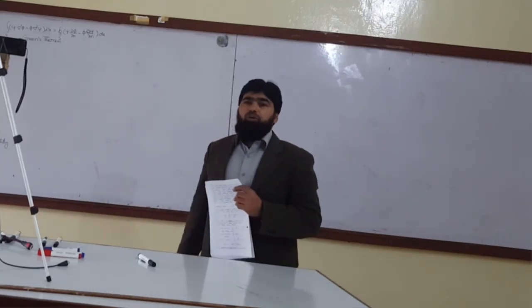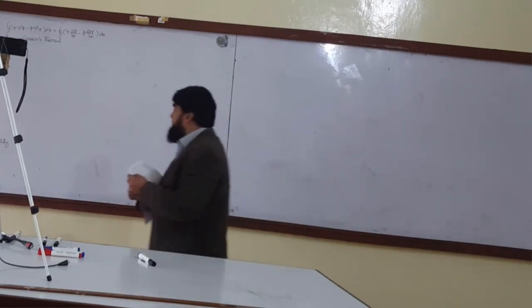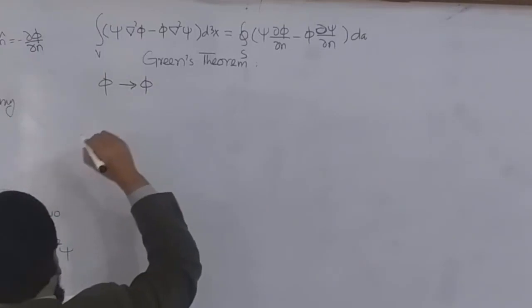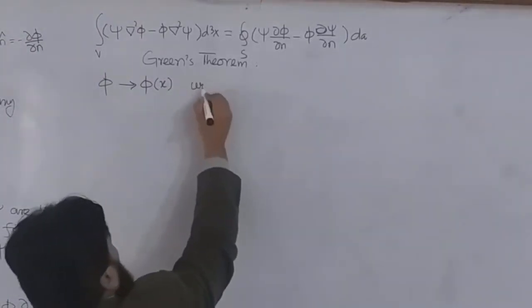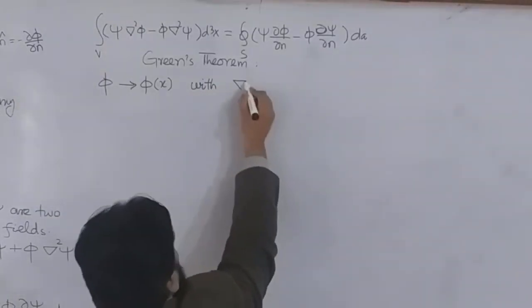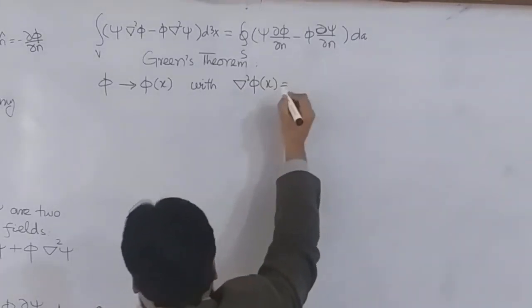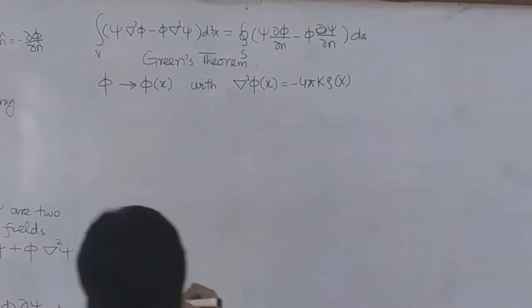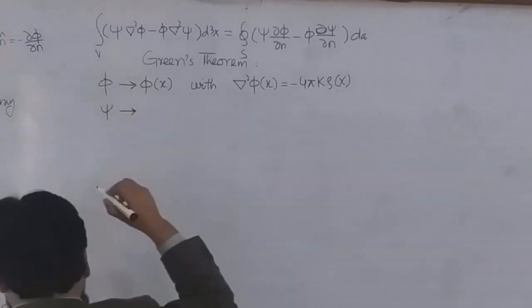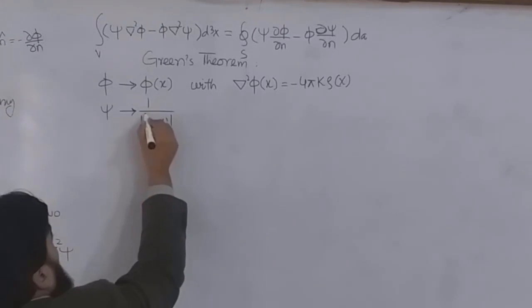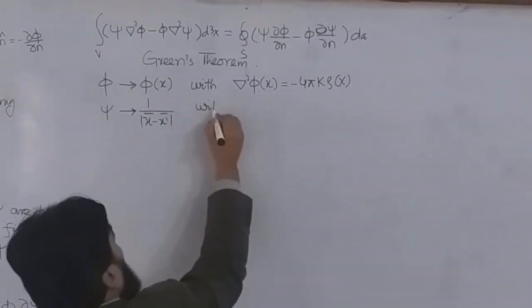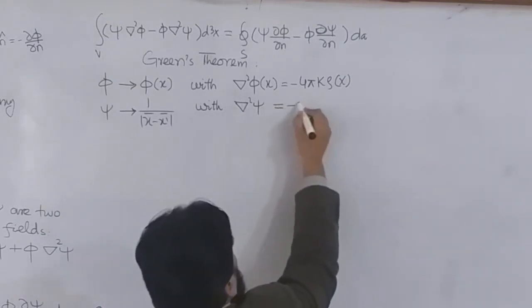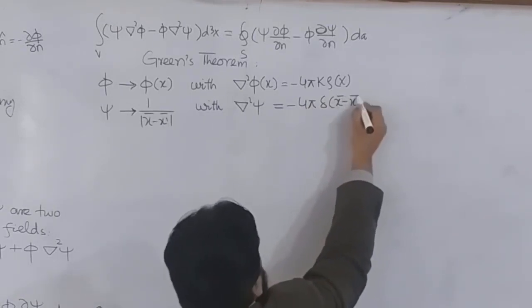Now we will insert into Green's identity some arbitrary functions. For φ, I write φ(x) such that ∇²φ(x) = −4π k ρ(x) — this is Poisson's equation. For ψ, I put the value 1/|x − x'|, and for ψ we know that ∇²ψ = −4π δ(x − x').